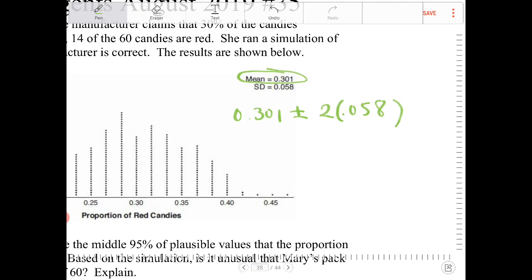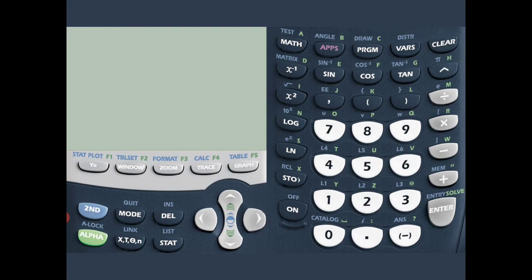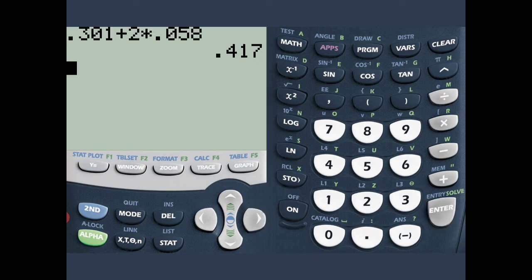And if we do this, let's take our calculators and do that. So, we're here. 0.301 plus two times 0.058. That will be 0.417.